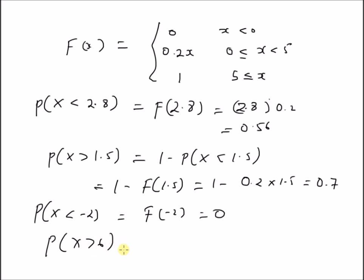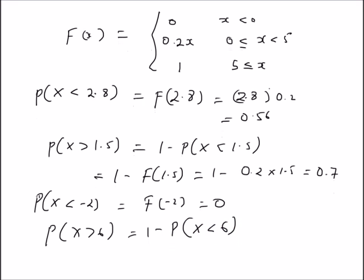Finally, for P(X > 6), we use the formula P(X > a) = 1 − P(X < a), which gives 1 − P(X < 6). The value 6 lies in the third interval, so the CDF at this point equals 1. Therefore, 1 − 1 = 0, so P(X > 6) = 0.